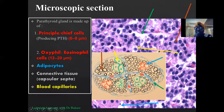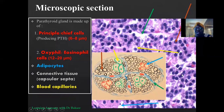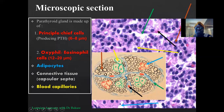We also have blood vessels. These glands are endocrine glands, and endocrine glands do not have ducts, so whatever they produce is taken directly into the blood. You should therefore expect blood capillaries within these glands. This is the blood capillaries distributed within the section. So this is what the histological section of the parathyroid gland presents.